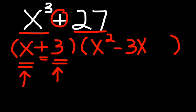Finally, we square the second term of the new factor, and that's 3 times 3 is 9, and that becomes the last term of our new factor. And there are the two factors of x cubed plus 27.